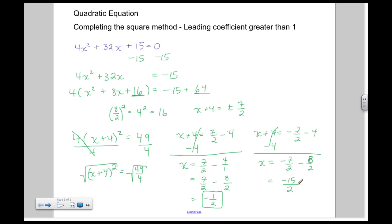So if I were to place this in a calculator, I'm looking at -0.5 and this here would be -7.5 as the roots.